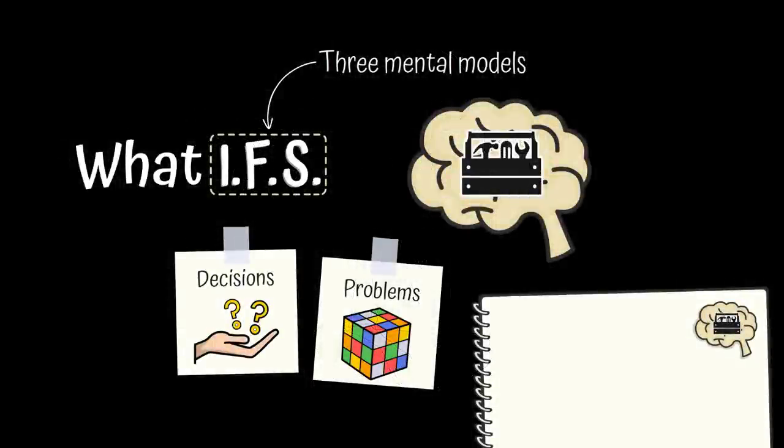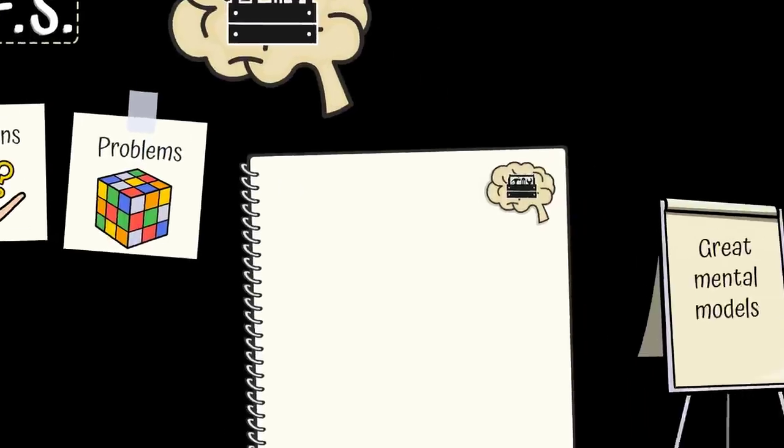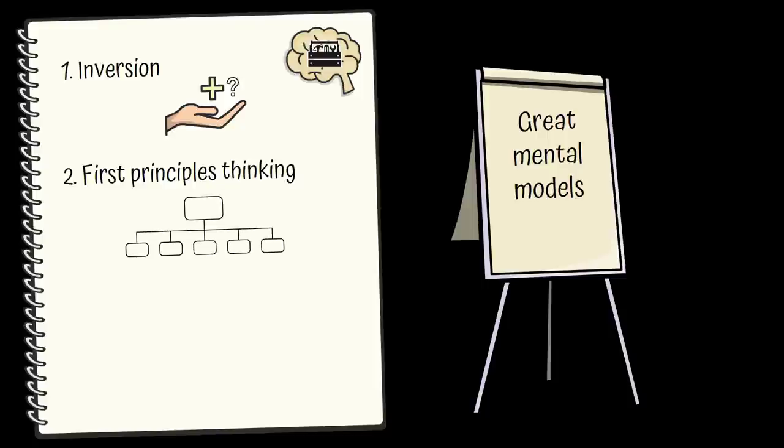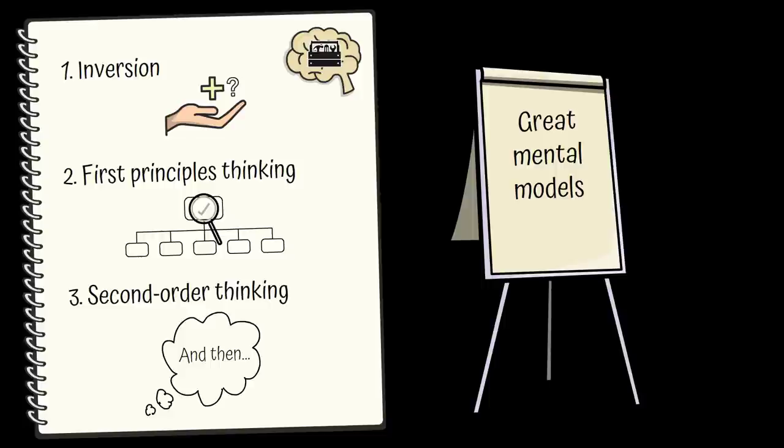In the end, if you're struggling with a problem or need to make an important decision, consider the three what-ifs. Inversion: solve the opposite problem or consider how you'd make a terrible decision, then invert your ideas and see what valuable insights you discover. First principles thinking: examine the foundational components of existing solutions and test them. Adopt a solution with sound fundamentals or use the first principles you uncovered to develop a better solution. And second order thinking: simulate reactions to your solution or decision to prevent your solution or decision from backfiring.